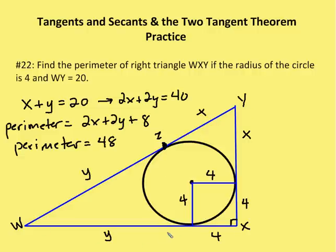I also know then that, we'll call this L and this J, I know that JY will be equal to X because I have the two-tangent theorem. ZY and JY are congruent, and then I know ZW and WL are congruent.